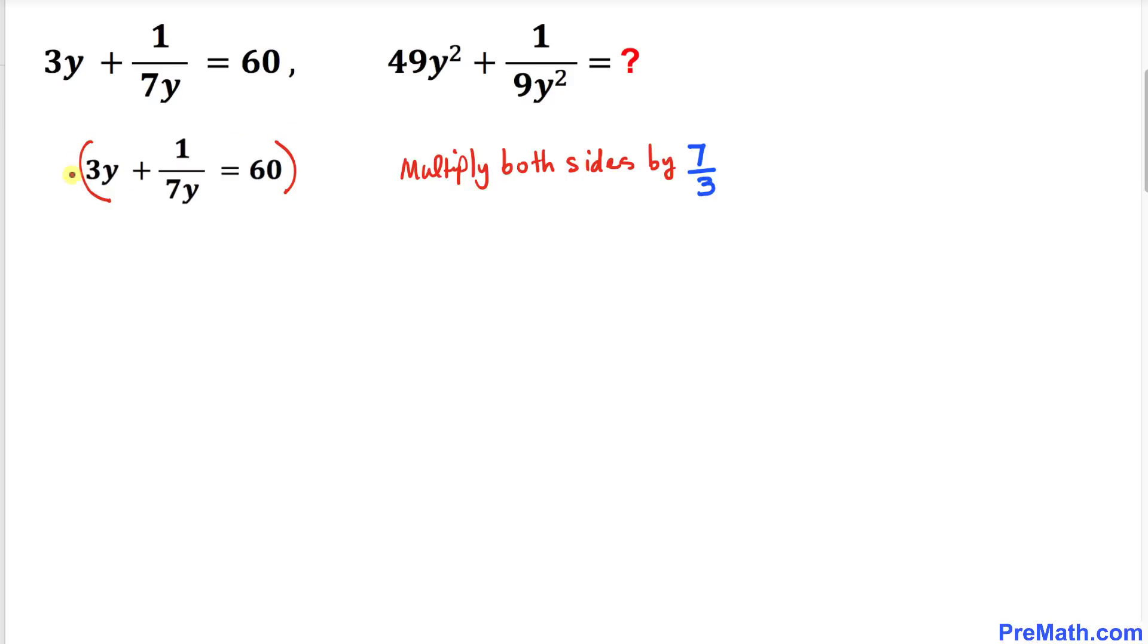Now let's distribute. 7/3 times 3y plus 7/3 times 1/7y equals 7/3 times 60. The 3s cancel out, giving us 7y. The 7s also cancel, giving us 1/3y. On the right side, 3 goes into 60 twenty times, so 20 times 7 is 140.